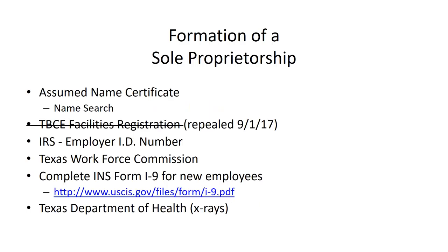To form a sole proprietorship, if the business will use a name other than the owner's name, you need to file an assumed name certificate. You file that certificate with the county clerk's office. In Texas, county clerk's offices generally charge about $20 to $30 for filing. It's a short form, usually one to two pages, asking for the name and address of the business and the name and address of the owner. It needs to be signed, notarized, and filed in the county records — and that creates the business as a sole proprietorship.